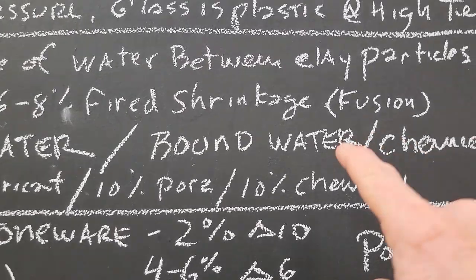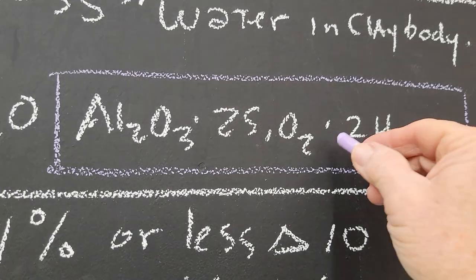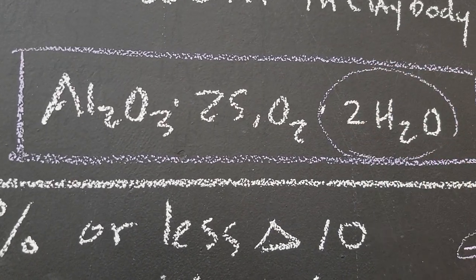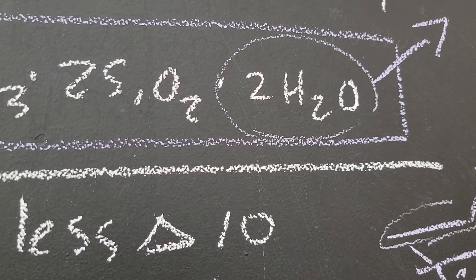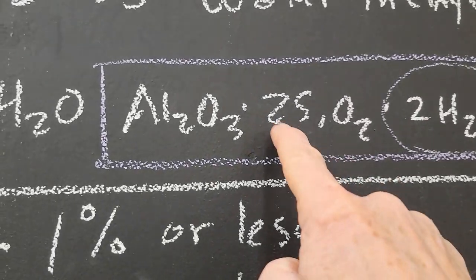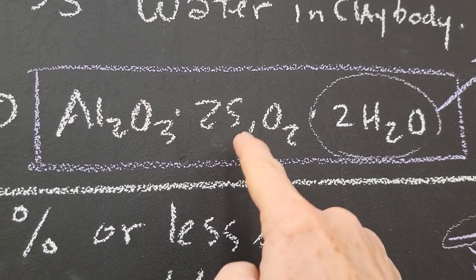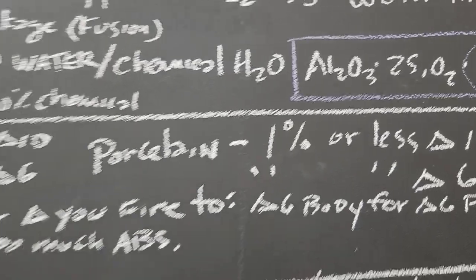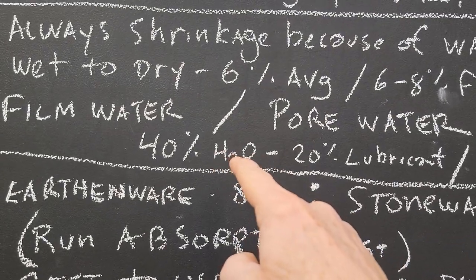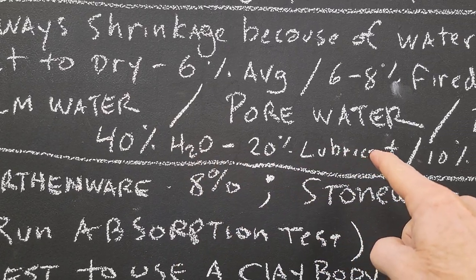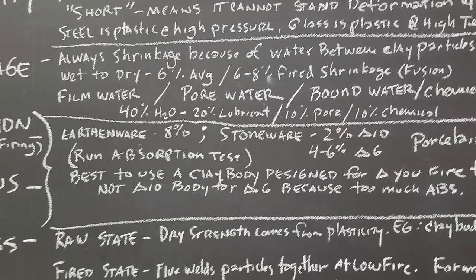The last type of water is bound water or chemical water, which is on the clay molecule itself. When you bisque fire you drive that water off — before that it's a clay particle; after the water leaves it becomes ceramic or bisqueware. Generally speaking, about 40 percent of wet clay is water: 20 percent lubricant, 10 percent pore, and 10 percent chemical — just a general idea.